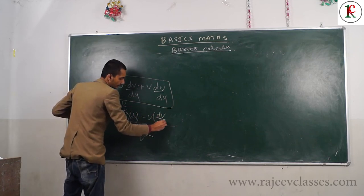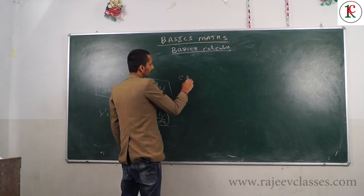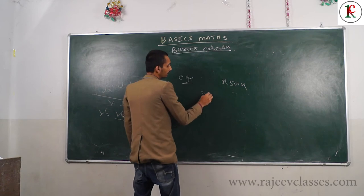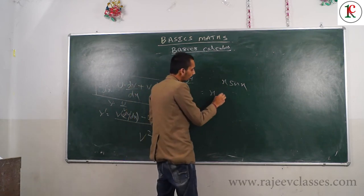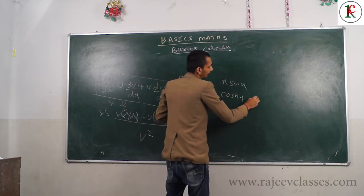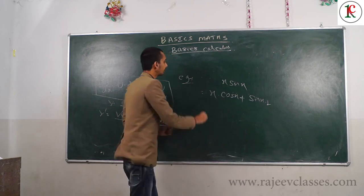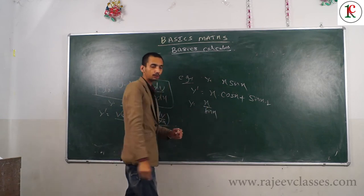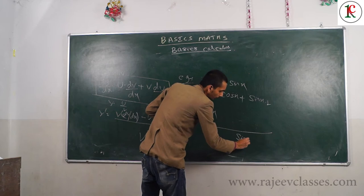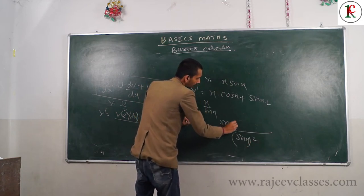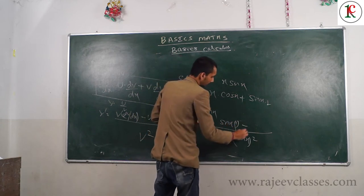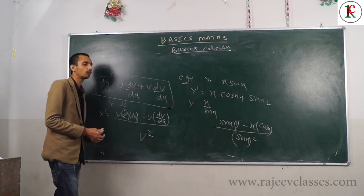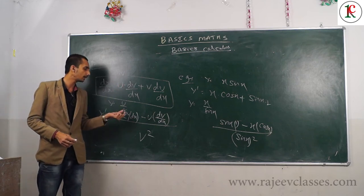Let's take an example. Suppose Y equals X times sin X. Using product rule: take X (which differentiates to 1) times sin X plus X times differentiation of sin X (which is cos X). This gives sin X plus X cos X. For division example, if Y equals X upon sin X, we get (sin X times 1 minus X times cos X) divided by sin squared X.